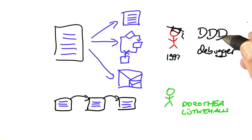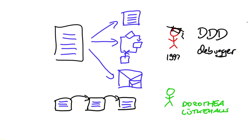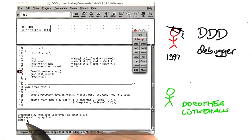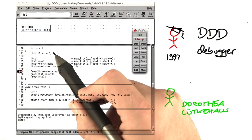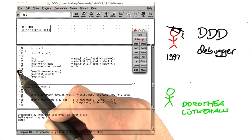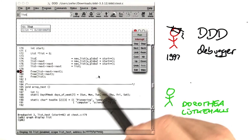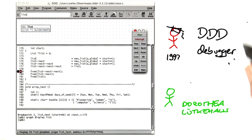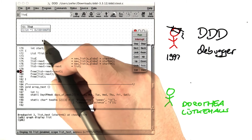The resulting tool became a debugger named DDD for Data Display Debugger. This is what DDD looked like. It had a command line interface, so you could enter arbitrary commands. You would also see the source code, be able to set breakpoints and see the current execution position. The interesting thing about DDD, as the name says, was the ability to show data structures.